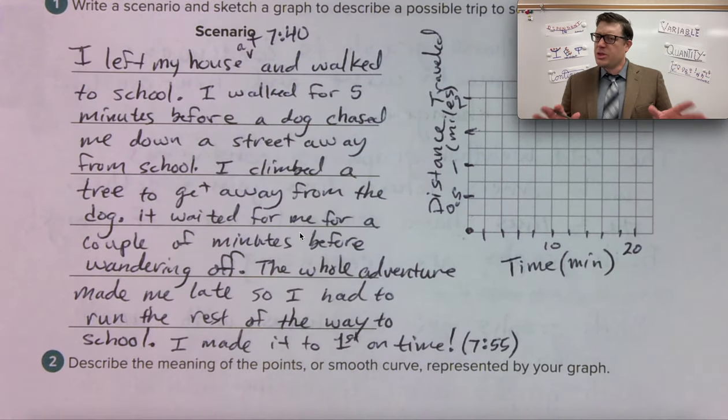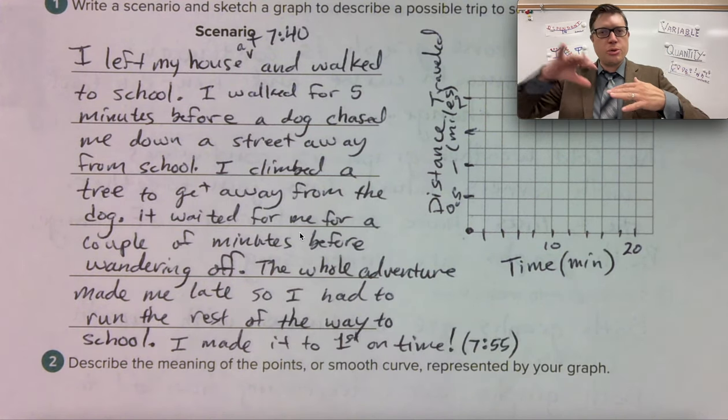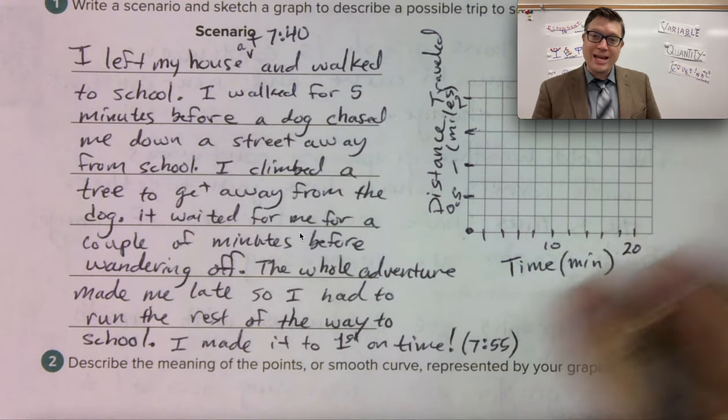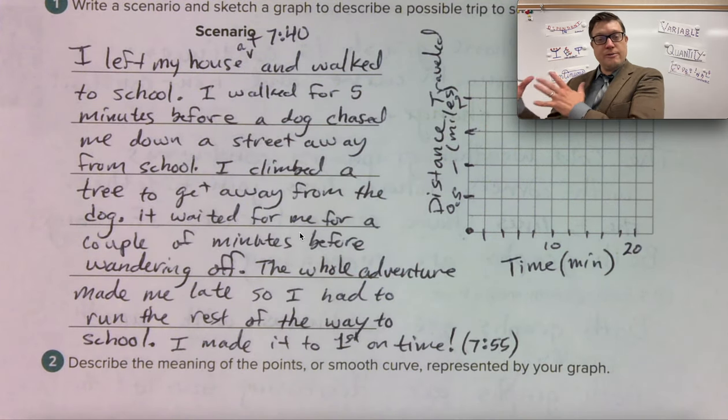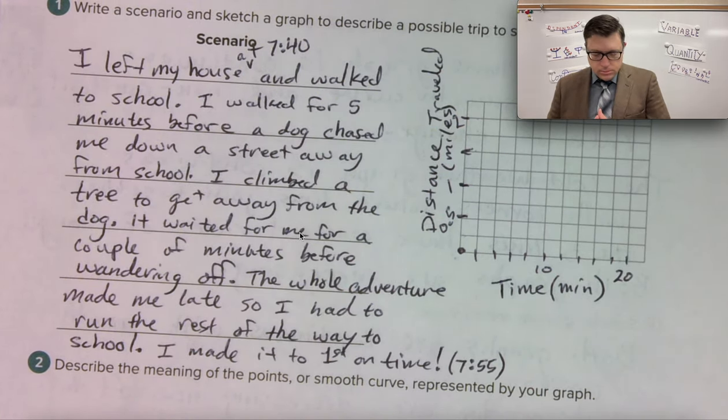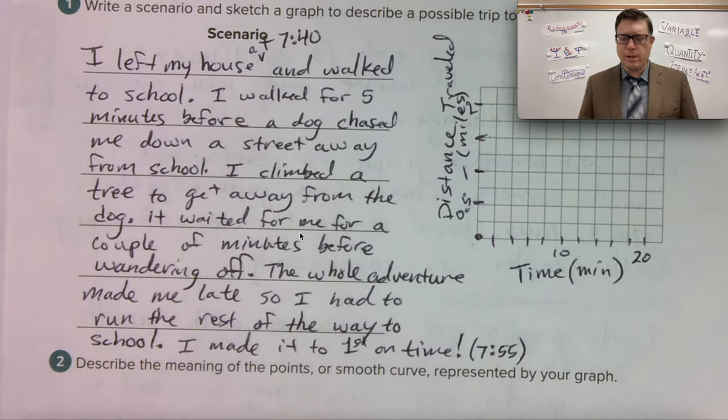Going by twos. I thought threes, but then that'd be a really compressed graph. And I want my line to go through the middle of the graph grid area and not be smushed over to the left side of the graph. And ones didn't work. It wouldn't have been enough distance. So going by two minutes.